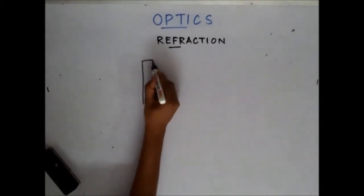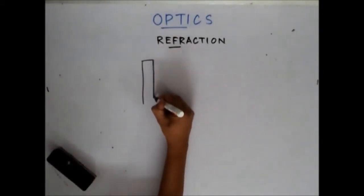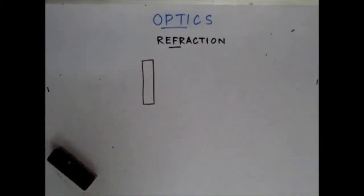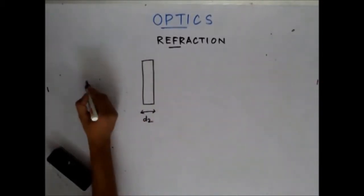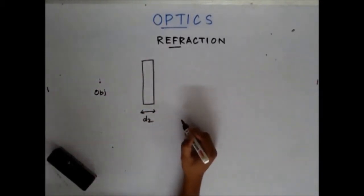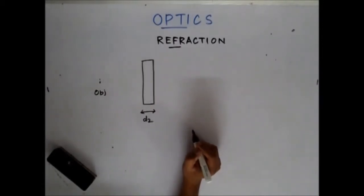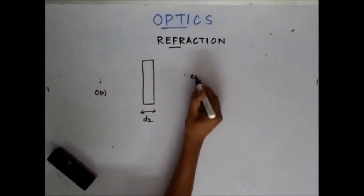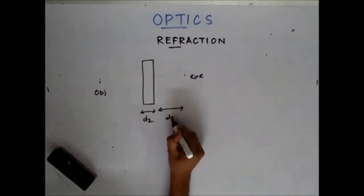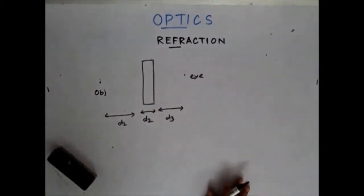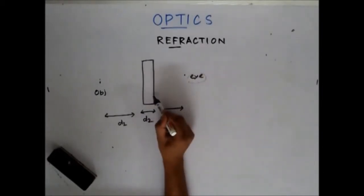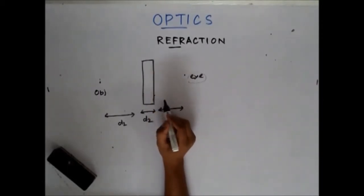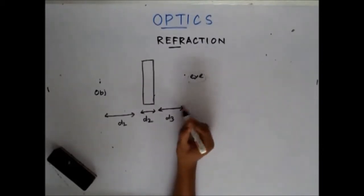Now let's say I have a glass slab introduced in a medium. The thickness of the glass slab is d2. The object is here; this distance is d1 and this distance is d3. My eye is here. The question is: what is the shift observed by the eye of the object? Obviously there are two refracting surfaces, and because of these two refractive surfaces there will be a shift occurring. Find the shift.